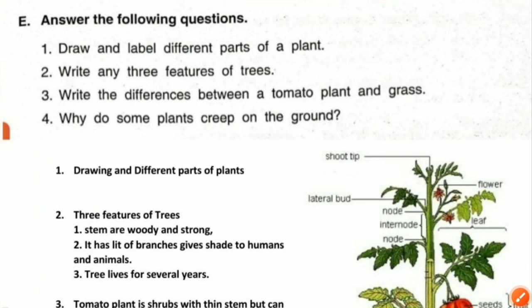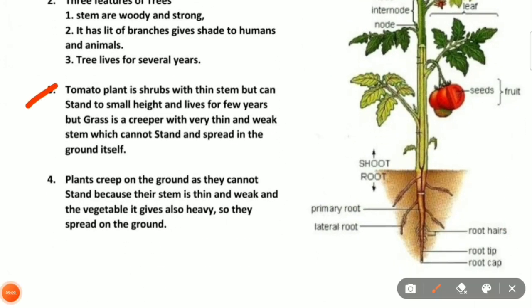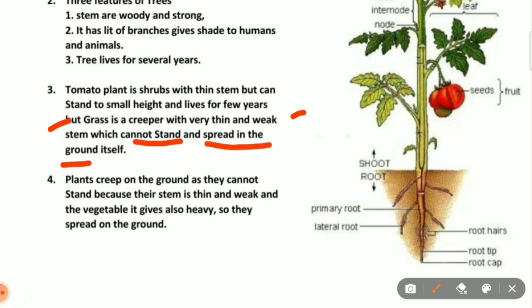Next question: write the differences between tomato and grass. Tomato plant is a herb with a thin stem but can stand to a small height. It is a small seasonal plant that lives for a few years. But grass is a creeper with a very thin and weak stem which cannot stand and spreads on the ground.